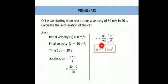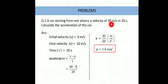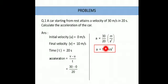So if the acceleration of a car is 1.5 meter per second squared, it takes 20 seconds to increase the speed to 30 meter per second. If the acceleration is more than 1.5 — for example, 2, 3, or 5 meter per second squared — then it will take only 5 seconds to reach a speed of 30 meter per second. If acceleration is less, it takes more time; if acceleration is more, it takes less time to reach a certain speed.